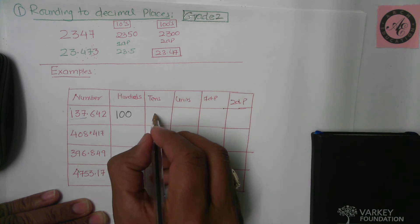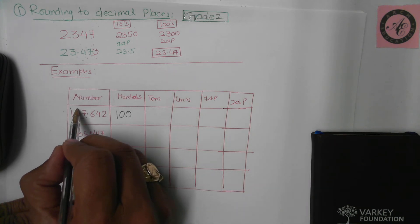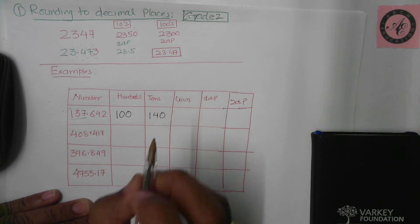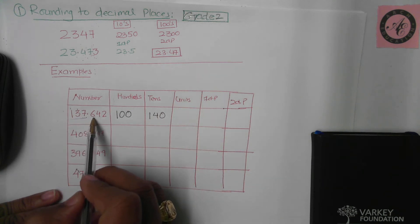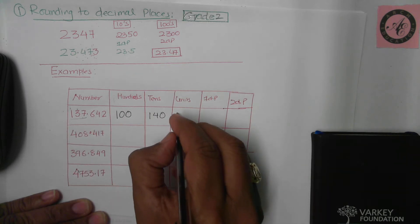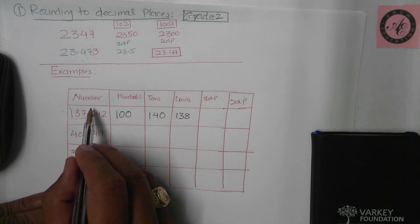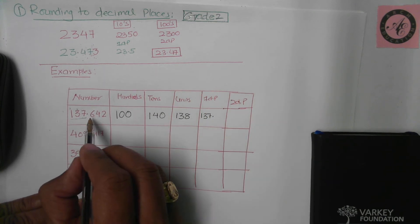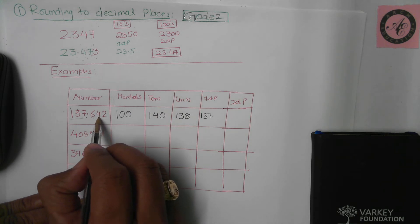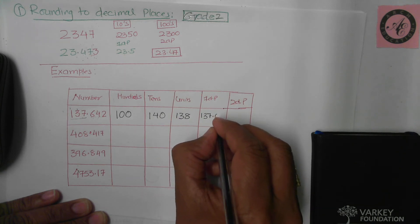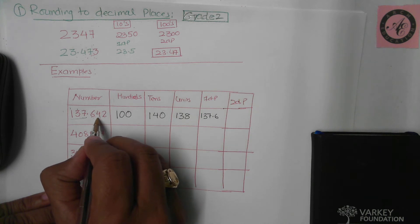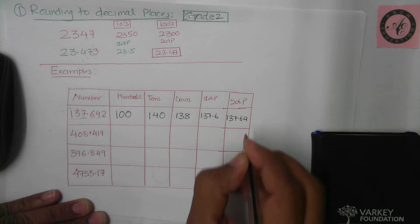Rounding to the nearest ten: the tens digit is three and the next digit is seven, so 37 rounds up to 40, giving 140. Rounding to the nearest unit: the units digit is seven, and the next digit is six (from 137.6), so it rounds up to 138. For one decimal place, we write everything up to the first decimal digit — 137.6 — and the fate of six is decided by four; four keeps six as six, so 137.6. For two decimal places, the fate of four is decided by two — which keeps four as four — so the answer is 137.64.